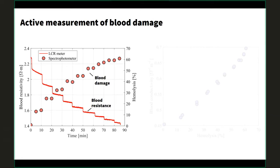Next we moved on to blood. Using porcine blood as our working fluid, we started with healthy blood in the reservoir and at set time intervals added mechanically damaged blood — a separate sample damaged as severely as possible. We then observed how blood resistance changed over time as we added the damaged blood. The left plot shows blood resistance versus time, with the solid line from the LCR meter. The step-like pattern reflects each addition of damaged blood, and we clearly see blood resistance decreasing — meaning the blood became more conductive as damage increased.